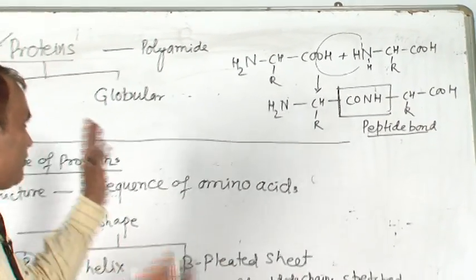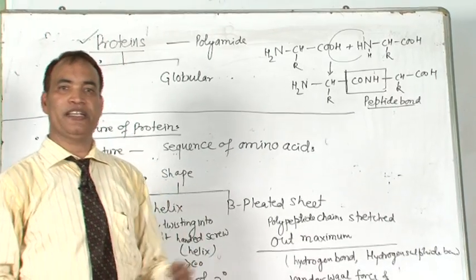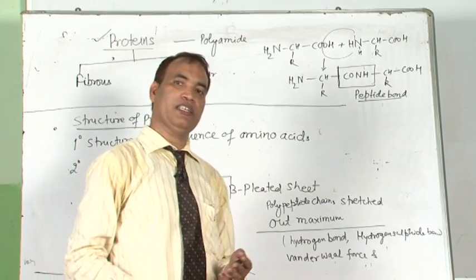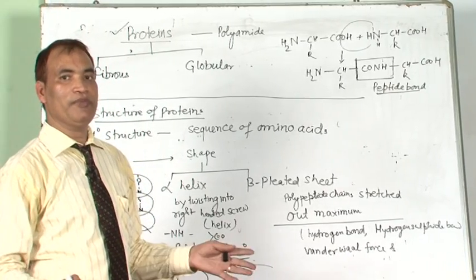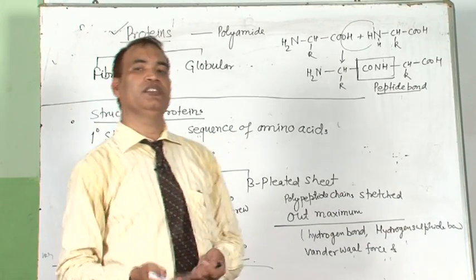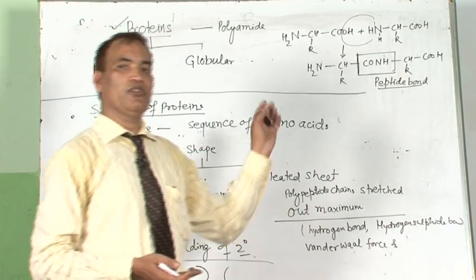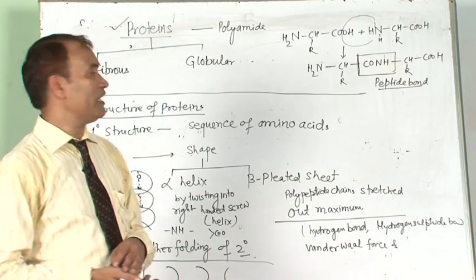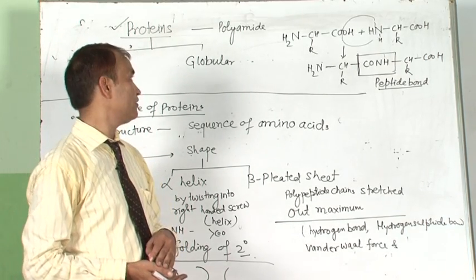On the basis of the number of amino acids, proteins are classified as dipeptide, tripeptide, pentapeptide, hexapeptide, and so on, finally giving polypeptide. A polypeptide having 100 or more amino acids is known as a protein. However, there are certain proteins with fewer than 100, like insulin, which contains 51 amino acids.